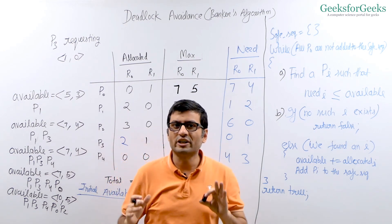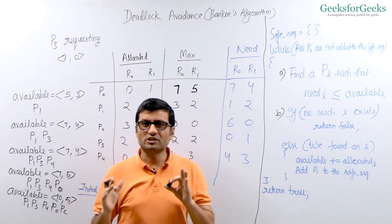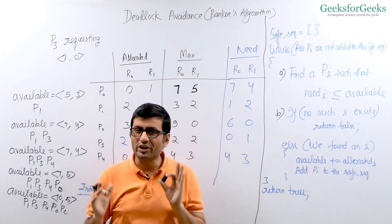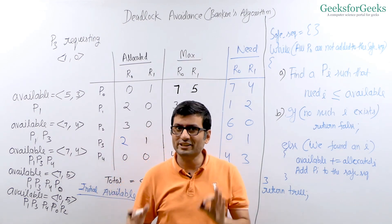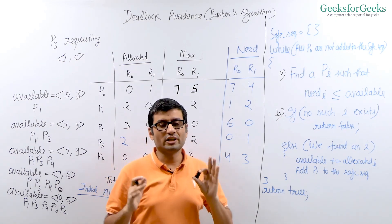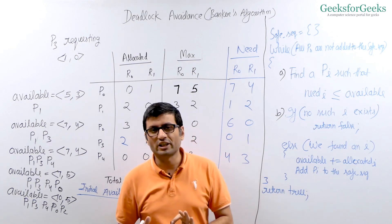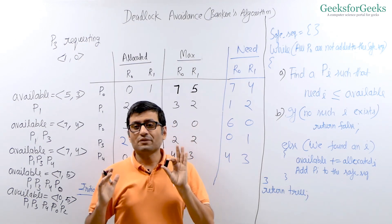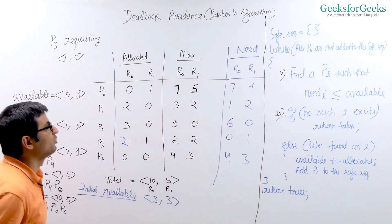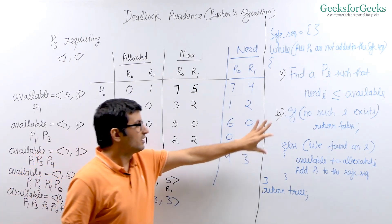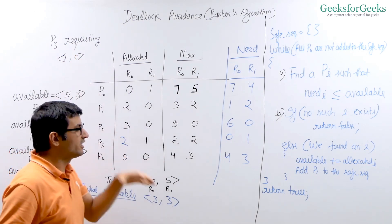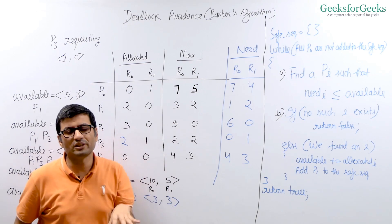That is what is done in deadlock avoidance. Whenever a process requests resources, you check whether it's making a legitimate request — not exceeding its declared maximum. If fine, check that it's not greater than currently available. After that, run this algorithm to check if allocating this resource would lead to a deadlock or not. This algorithm runs after assuming the resource is allocated, then checks whether that allocation would end up with a deadlock.